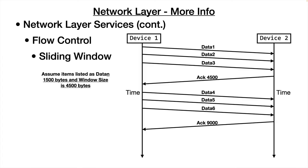As an example, assuming each data chunk is 1500 bits and the window size is 4500 bits: devices send chunks 1, 2, and 3, then receive an acknowledgement for 4500 bits requesting data 4. Then data 4, 5, and 6 are sent, and device 2 acknowledges 9000 bytes and requests data 7. Notably, 1500 is the maximum size of an IP packet, often referred to as the Maximum Transfer Unit (MTU), which many devices default to.